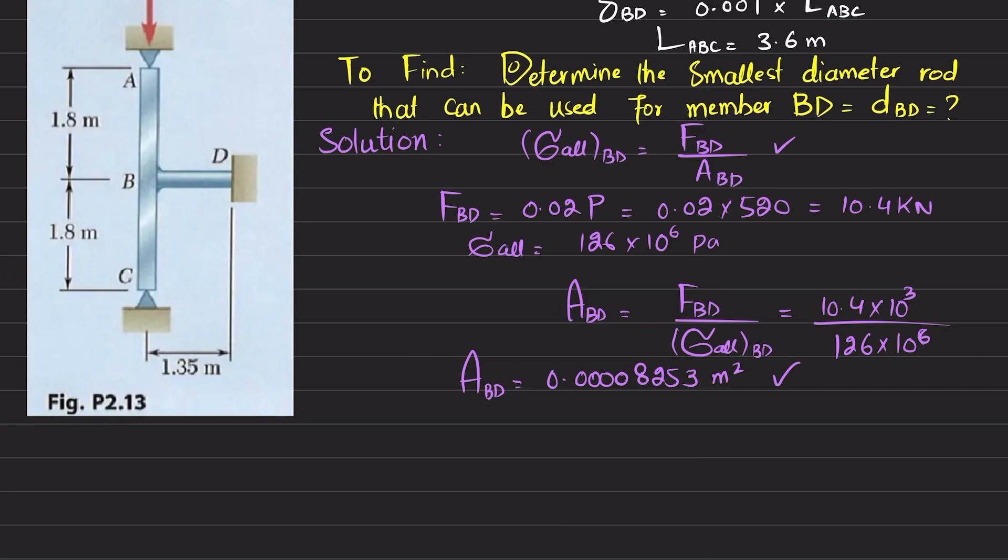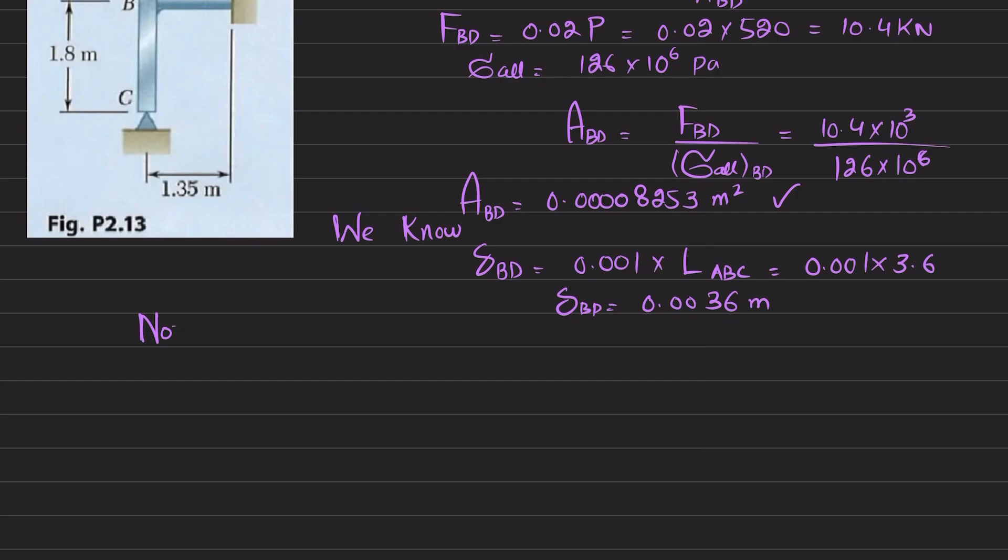We also know from the given data that change in length of BD is equal to 0.001 into length of ABC. This is the equation and length of ABC is also given, which is equal to 3.6. So you will get change in length of BD will be equal to 0.0036 meter. Now, we also know that change in length is equal to force into length divided by area into E.